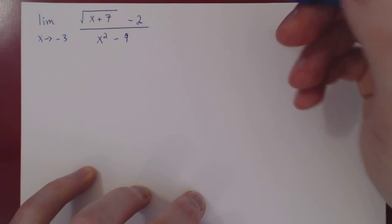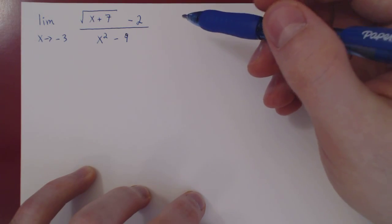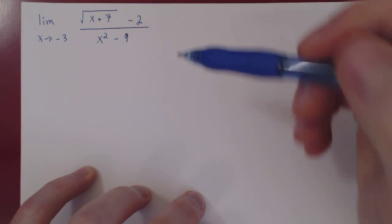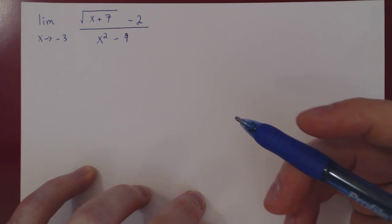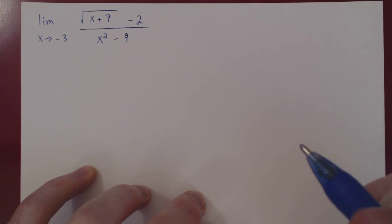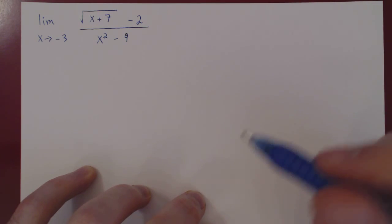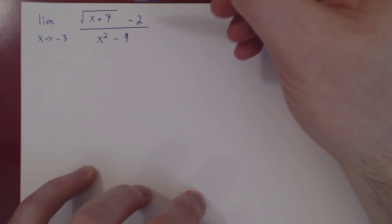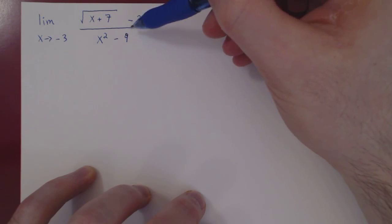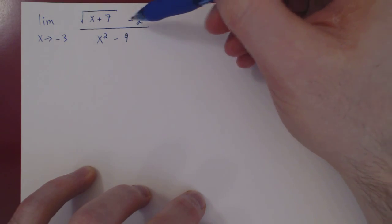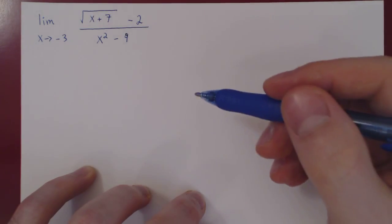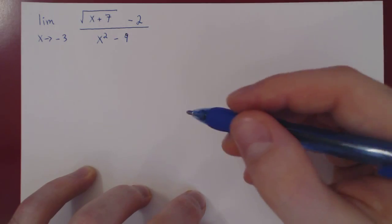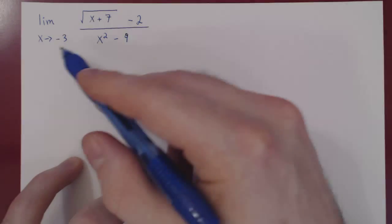In this video we will consider limits and the so-called method of conjugation. Conjugation is used with a difference or a sum involving at least one square root. Let's see how this plays out.